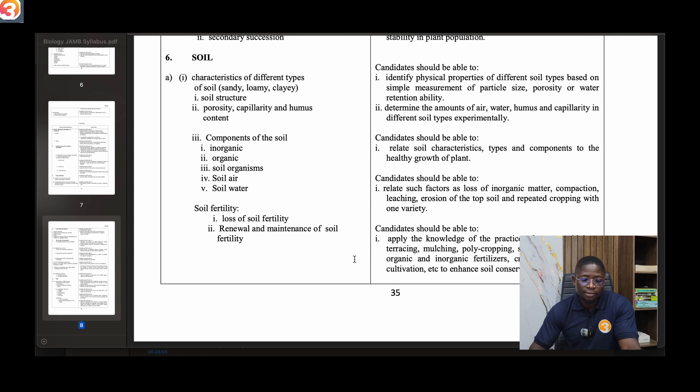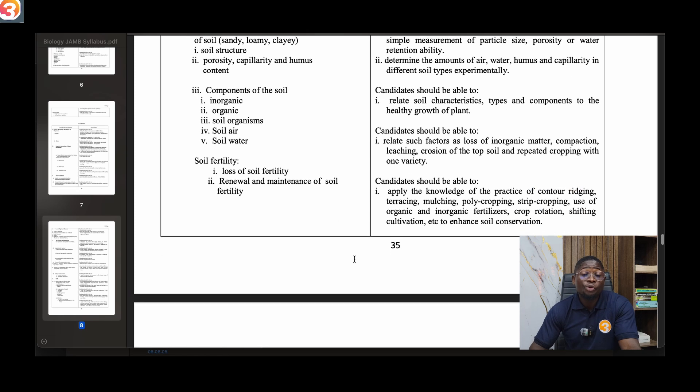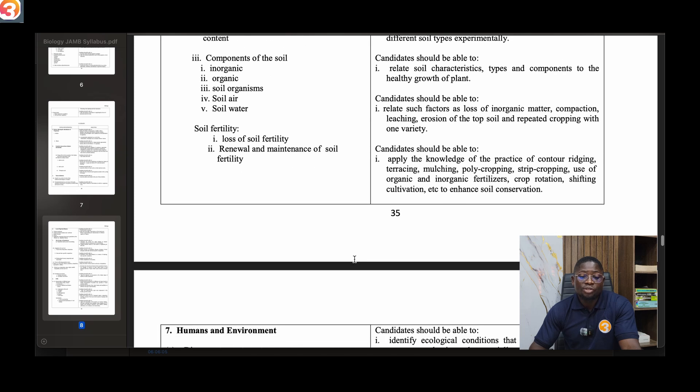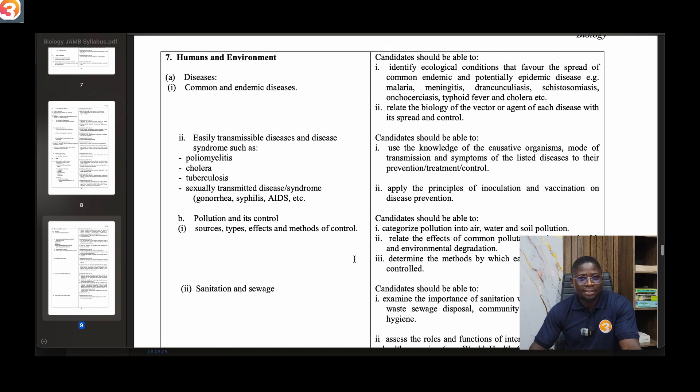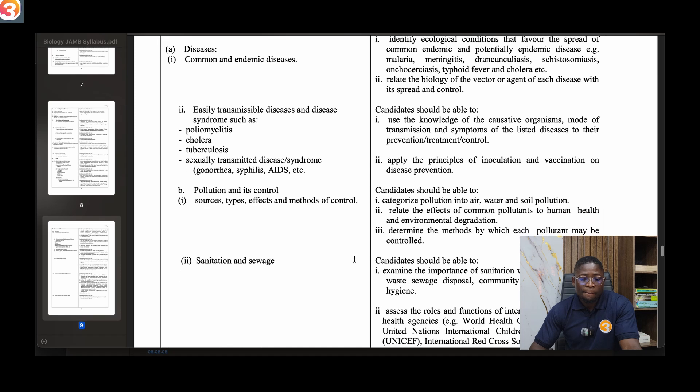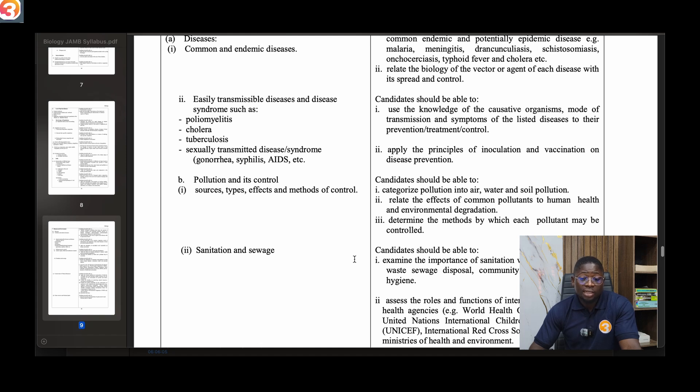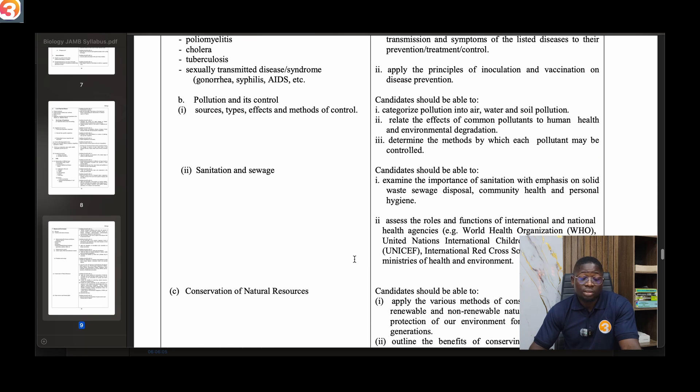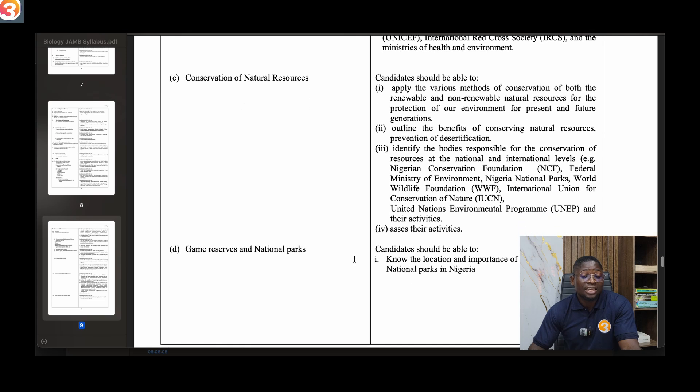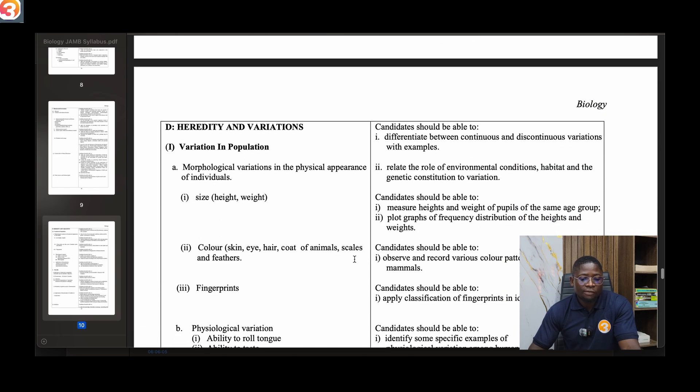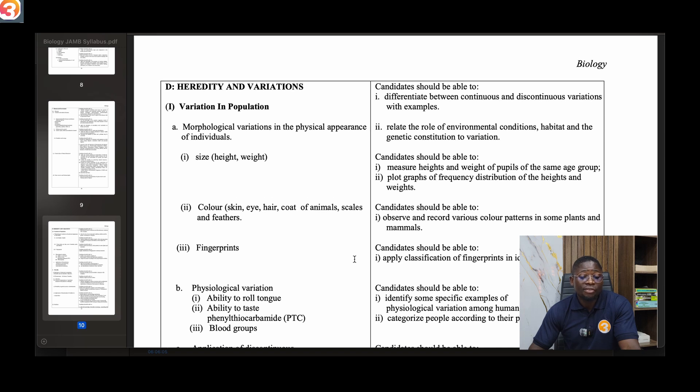Number six under ecology talks about soil - characteristics of different types of soil: sandy, loamy, clay. Soil structure, porosity, capillarity and humus content. Talk about components of the soil - inorganic, organic soil organisms, soil air, soil water. Soil fertility, the loss of soil fertility, renewal and maintenance of soil fertility. Number seven talks about humans and environment - diseases, common and endemic diseases, easily transmissible diseases and syndromes such as poliomyelitis, cholera, tuberculosis, sexually transmitted diseases like gonorrhea, syphilis and AIDS. Then pollution and its control, sanitation and sewage, conservation of natural resources, game reserves and national parks.